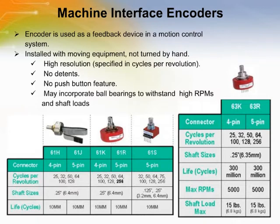In a machine interface application, the encoder is used as a feedback device in a motion control system. This means that the encoder is installed with moving equipment and is not turned by hand. It has higher resolution and is specified in cycles per revolution, not pulses per revolution. Machine interface encoders do not have detents or push-button features.